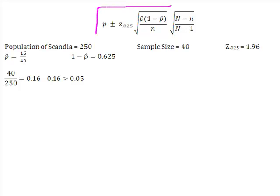This is the exact same way you construct a regular confidence interval. The whole key is, because 0.16 is greater than 0.05, I simply add on this part of the formula. So now what I've done is I've really just collected together all the information I'm going to need to solve the problem.